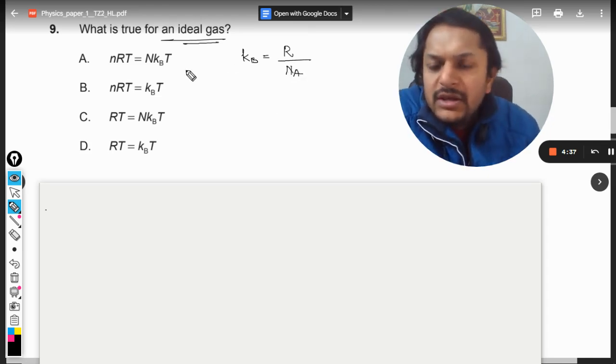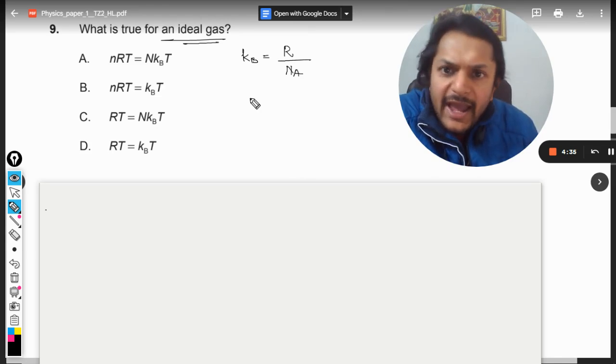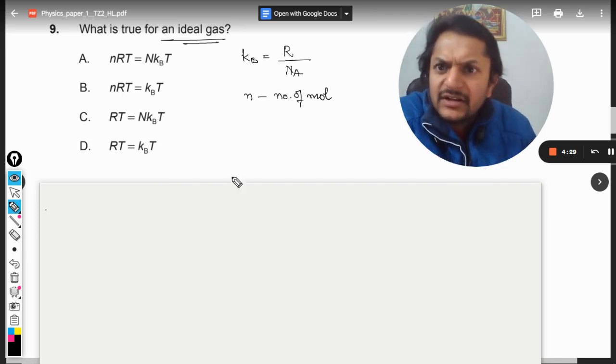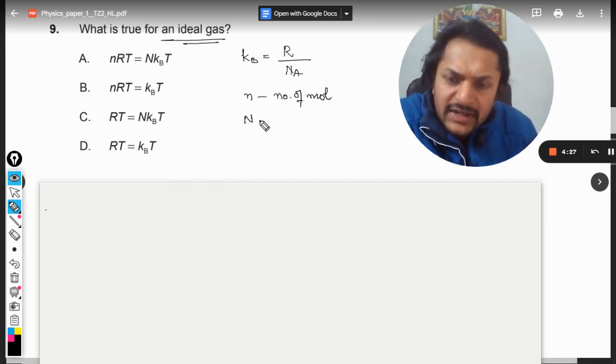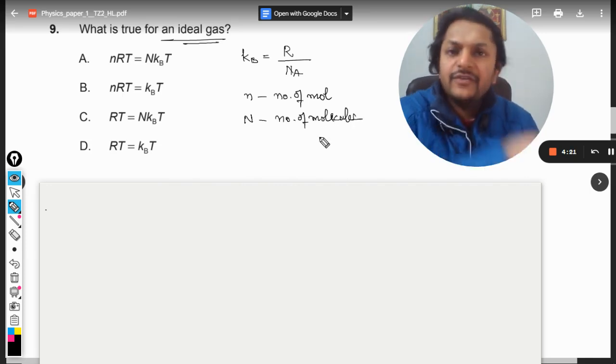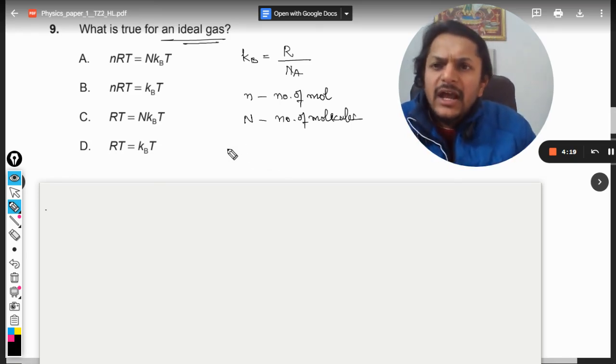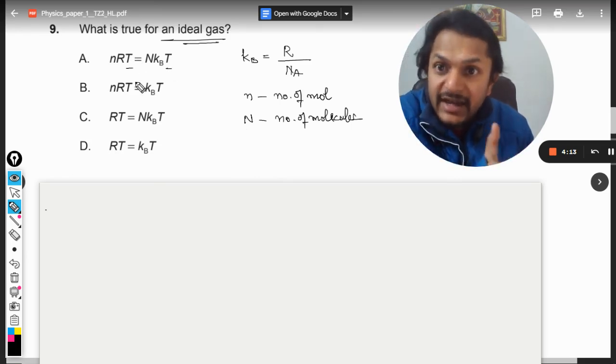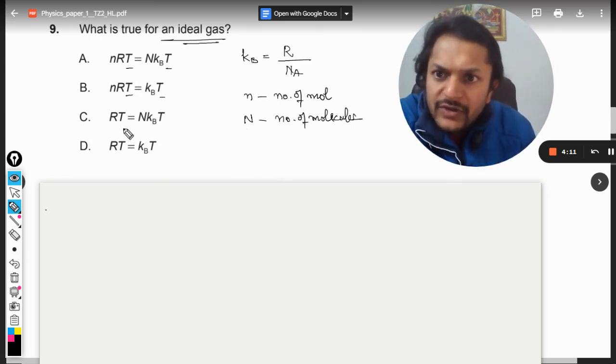So this is KB. T is temperature. What is small n? n is the number of moles as per simple symbols are concerned. Now what is capital N? It is the total number of molecules that they have taken in the sample. And R is the universal gas constant. Everything is okay. Now T is just multiplied on both of the sides which can be cancelled any time in all of the equations.